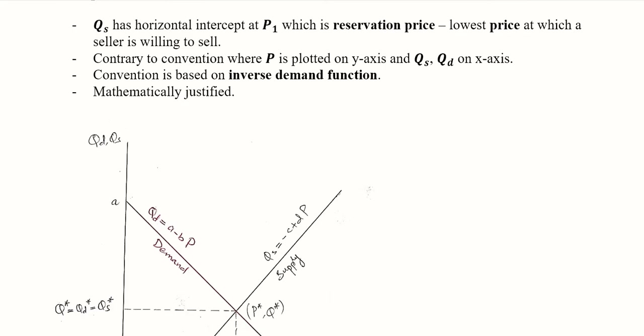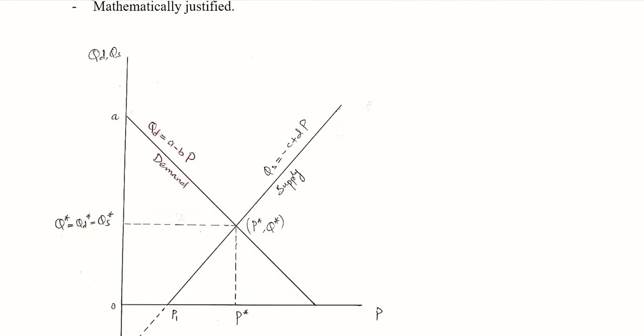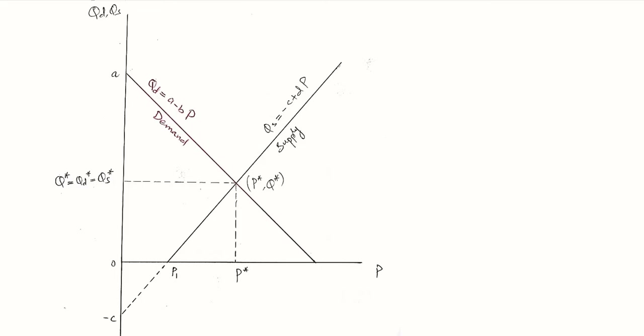These four parameters have economic interpretations in addition to their mathematical stipulations and ranges. Consider this diagram in which we have the demand diagram — as we already know, that's a negatively sloped curve — and we have the supply curve as well, which is positively sloped. This is where it intersects the x-axis and this is where it has the intercept on the y-axis.